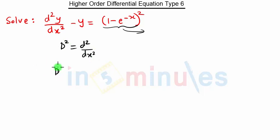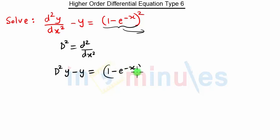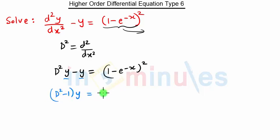So we get D squared into y minus y into the term (1 minus e raised to minus x) the whole square. Taking y common, we get D squared minus 1 into y equal to (1 minus e raised to minus x) the whole square.